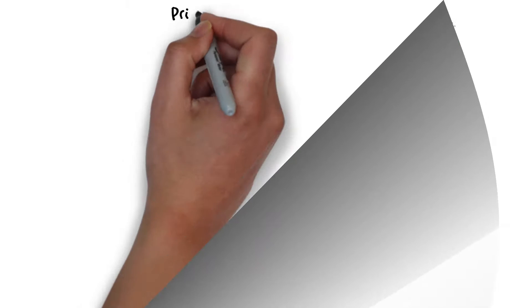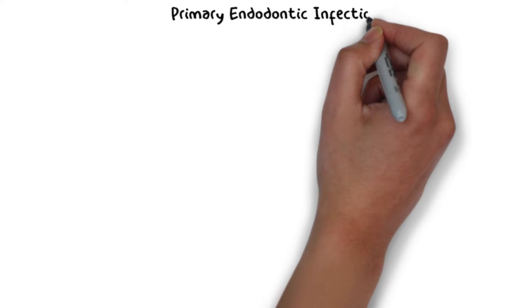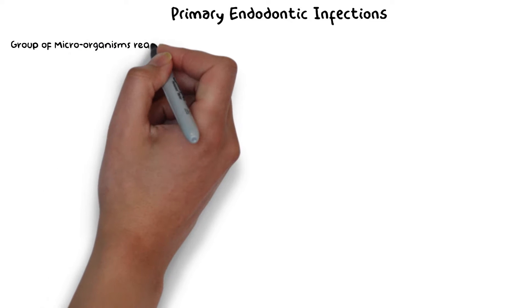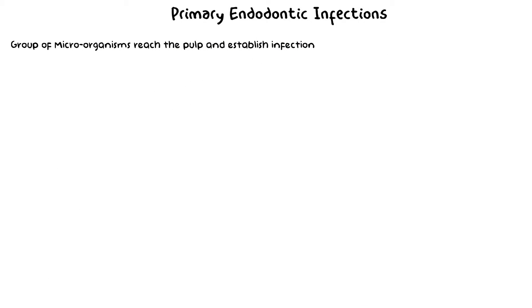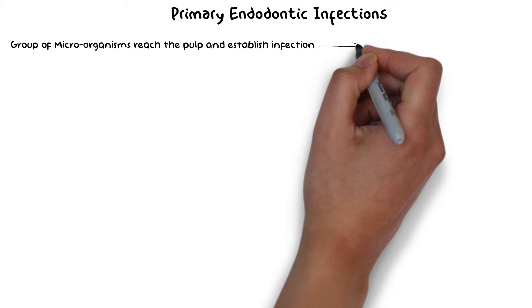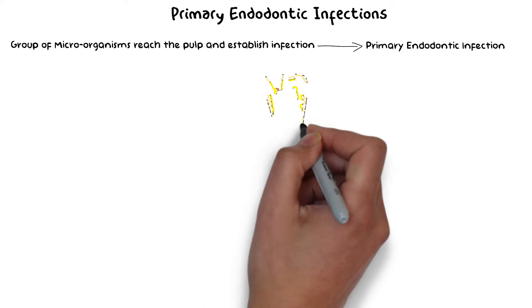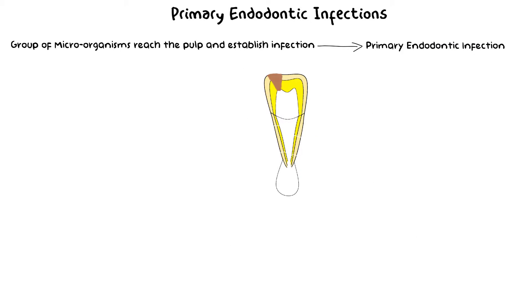First, let's start with primary infections. When a group of microorganisms initially gain access to the pulp, cause necrosis of the pulp, and finally establish an infection, this type of infection is known as the primary intra-radicular infection — the most basic form of endodontic infection. If you don't know how a microorganism establishes an infection, I recommend watching my previous lecture, endodontic microbiology part 2, where I discussed in detail how bacteria establish an infection in the pulp.